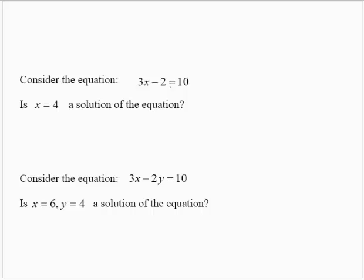We've learned how to do this in the past. When we were given an equation in one variable — for example, 3x minus 2 equals 10 — we can ask: is x equals 4 a solution? We check by substituting 4 for x to see if we get a true statement. Using order of operations: 3 times 4 subtract 2 gives 12 subtract 2, which is 10. 10 equals 10, so yes, x equals 4 is a solution.